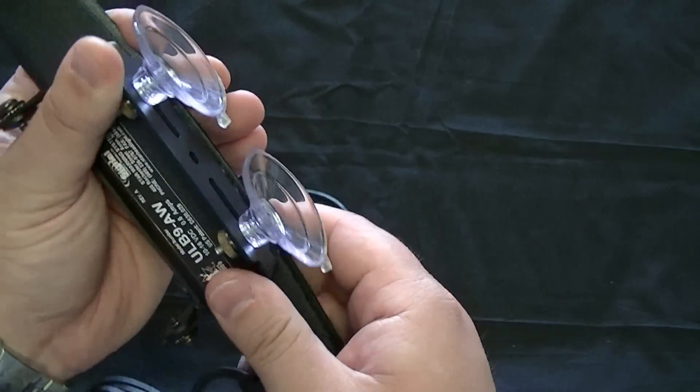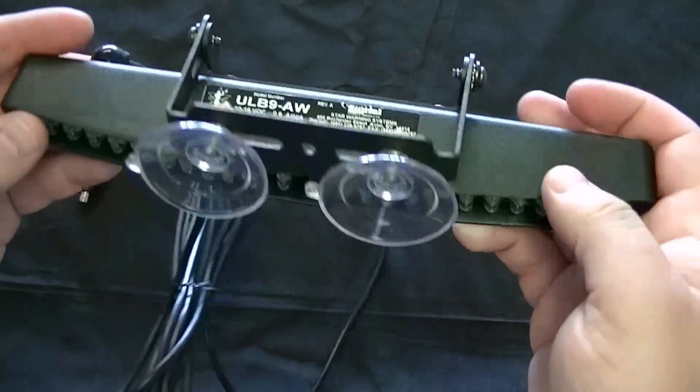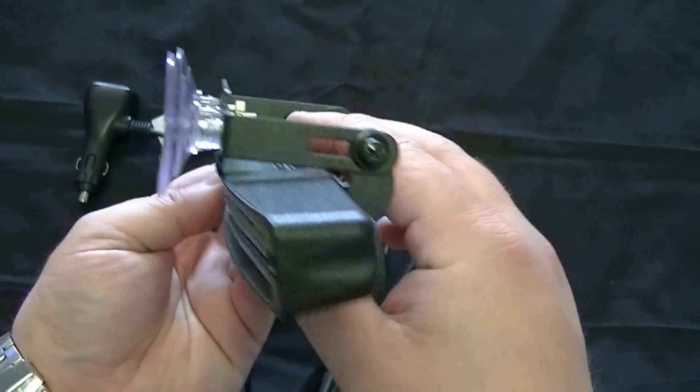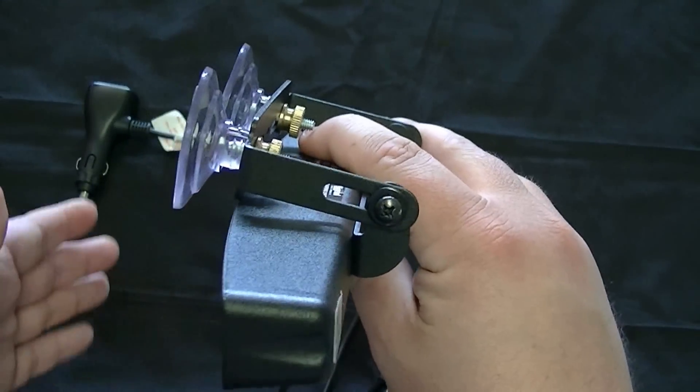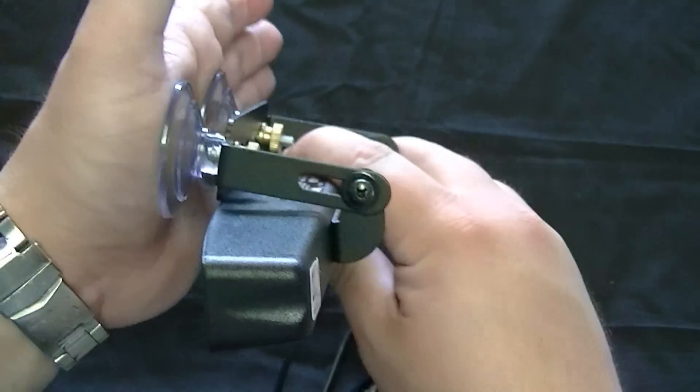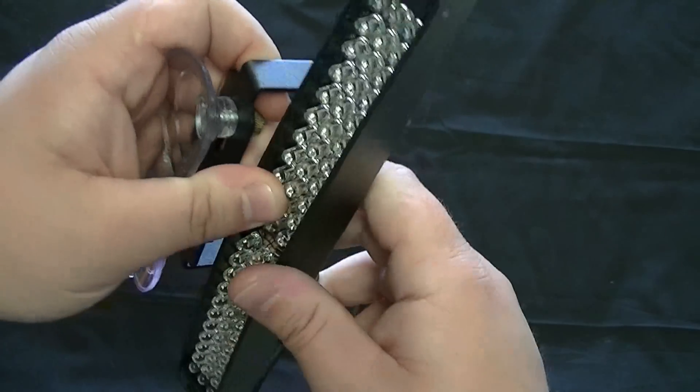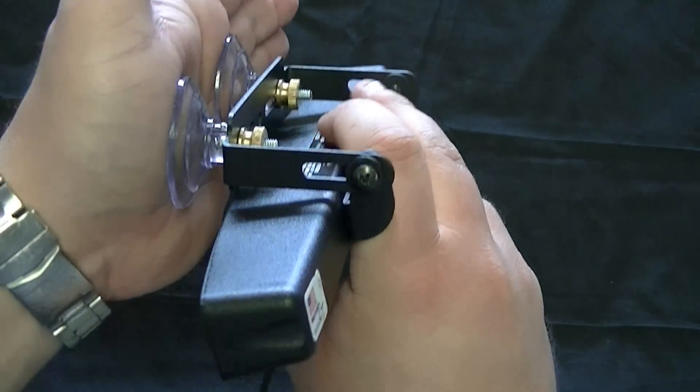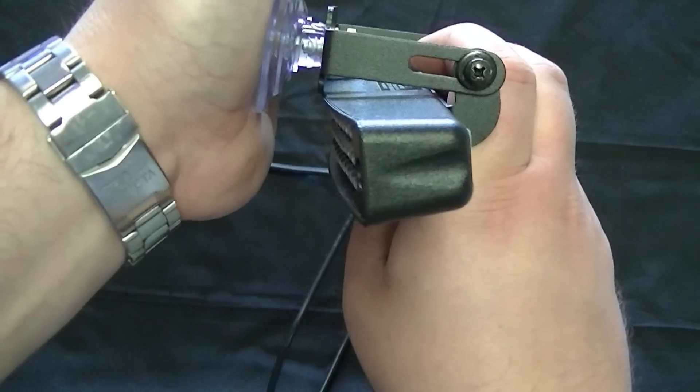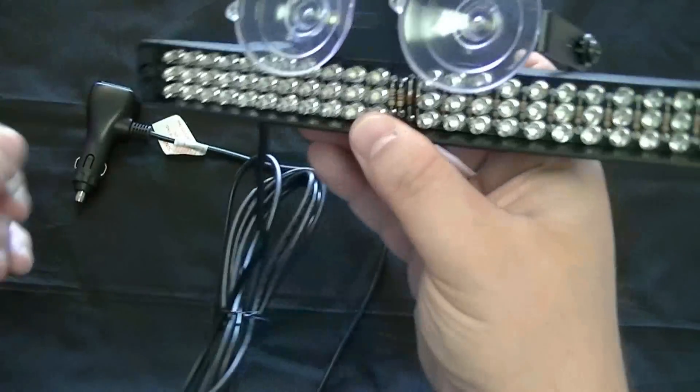For people or firemen or EMTs or whatever that may have a truck, this will also work in your back window. Just suction cup it straight to the back window. Actually, I think that bracket will come out a little bit farther. Suction cup it straight to the back window and it will shine out the back window, no problem.